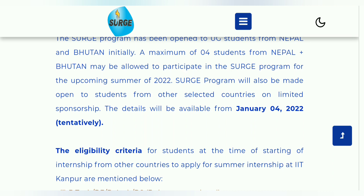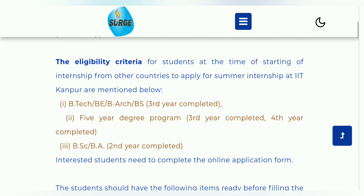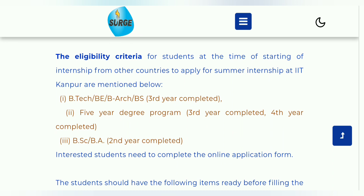Eligibility criteria — कौन-कौन सा student apply कर सकता है: First, B.Tech/B.E./B.S. जो 3rd year completed हैं, मतलब final year students जिनका final year के पहले तक result आ गया और अभी final year में pursue कर रहे हैं, वो apply कर सकते हैं। जो 5-year degree program में हैं और 3rd year completed होकर 4th year में हैं, वो भी apply कर सकते हैं। B.Ec./B.E. category के students जो 2nd year completed होकर final year यानी 3rd year में हैं, वो भी apply कर सकते हैं।